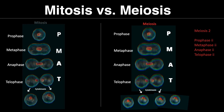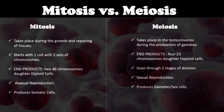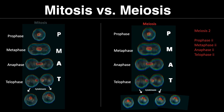On the HESI, you will be expected to know the major differences between mitosis and meiosis. Mitosis takes place during growth and repairing of tissue. It ends with two 46-chromosome diploid cells. It also reproduces by asexual reproduction. Meiosis reproduces using sexual reproduction, and its end product is four 23-chromosome daughter cells, or four haploid cells. Meiosis goes through two stages, which brings us to the different stages of mitosis and meiosis.